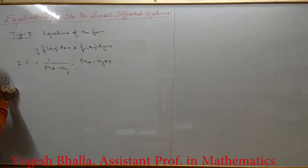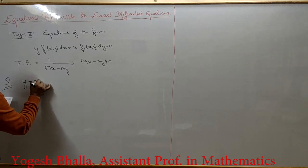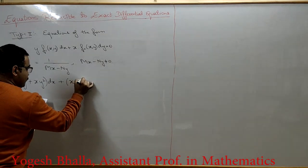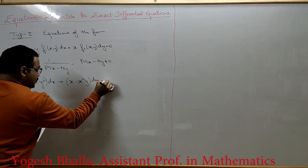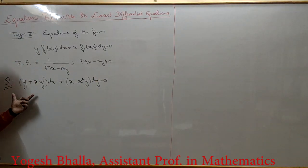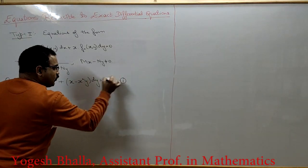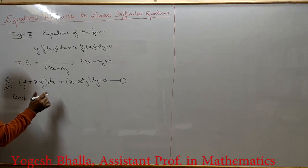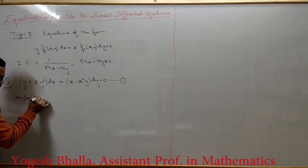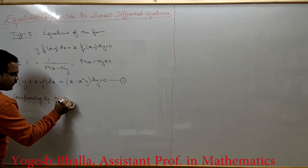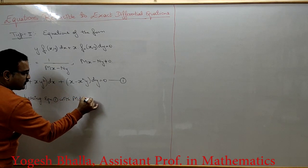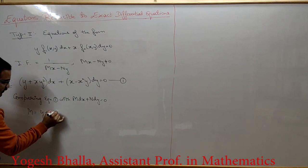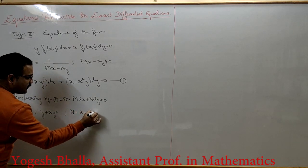The first question is: (y + xy²)dx + (x − x²y)dy = 0. Let this be equation 1. First we check whether this equation is exact. Comparing equation 1 with M dx + N dy = 0, the value of M is y + xy² and the value of N is x − x²y.